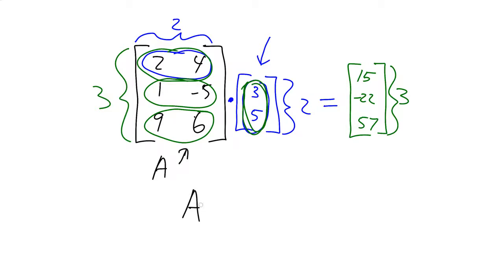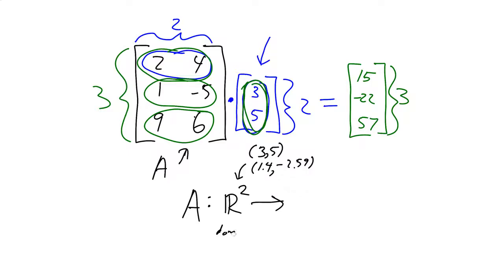The point is we get back a three-dimensional answer. We can call this matrix A. We can view A as a matrix, or we can view it as a function that takes a vector in R2 — ordered pairs of real numbers like [3, 5] or [1.4, -2.59] — and maps it to a point in R3. This is called a linear transformation, also called a linear map.